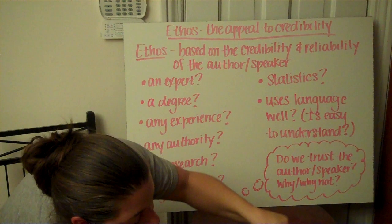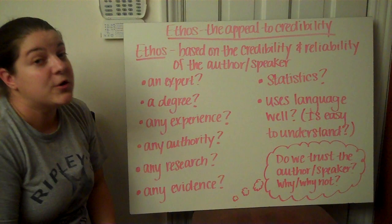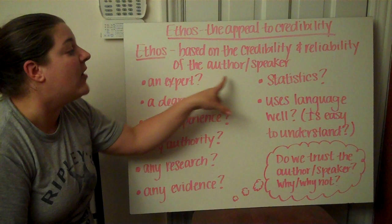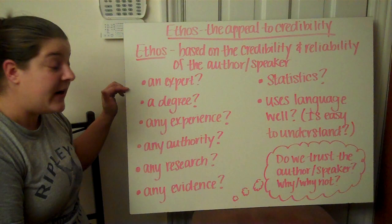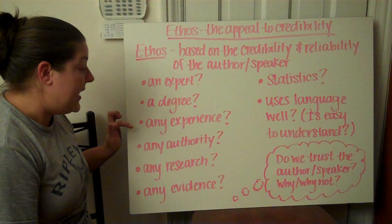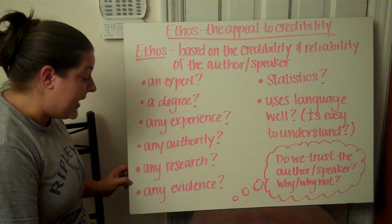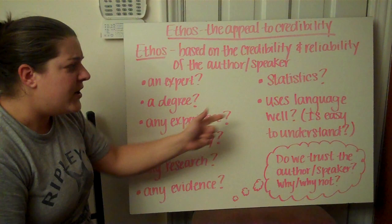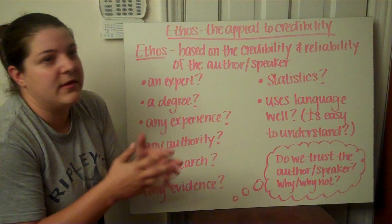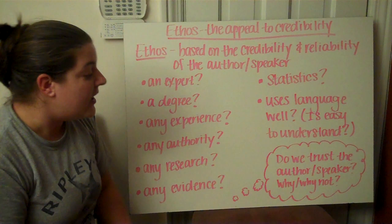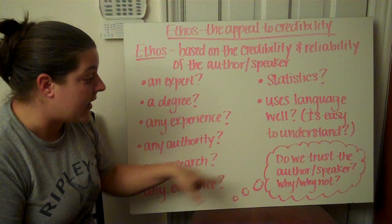Let's next move to Ethos. Ethos is the appeal to credibility — it is based on the credibility and reliability of the author or speaker. This is not just their information, but also who they are. Is the author an expert? Have they interviewed experts? Does the author have a degree, experience, or authority? Do they have research, evidence, or statistics to back up their claim? Do they use language well, or do they have problems with grammar, spelling, and mechanics? Are they easy to understand? The key question to keep in mind is: do we trust the author or speaker, and why or why not?